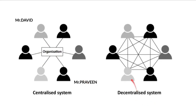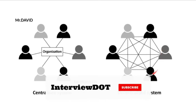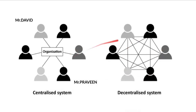In a decentralized system, for example, Mr. David wants to transfer money to Mr. Praveen. The transaction has to update multiple nodes. One of the main benefits is that it's very secure, but the disadvantage is that it takes more time because it has to update multiple nodes for a single transaction. If a hacker wants to hack the system, he has to take control of multiple nodes instead of just one.